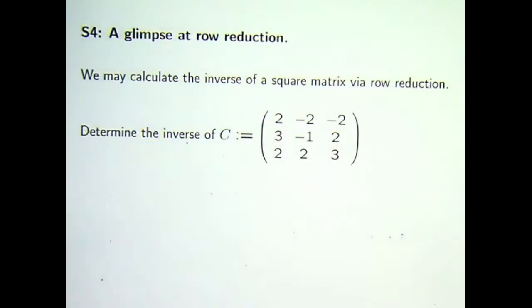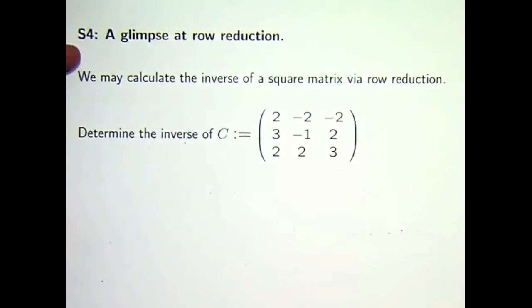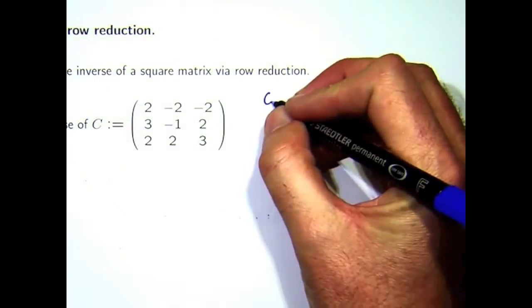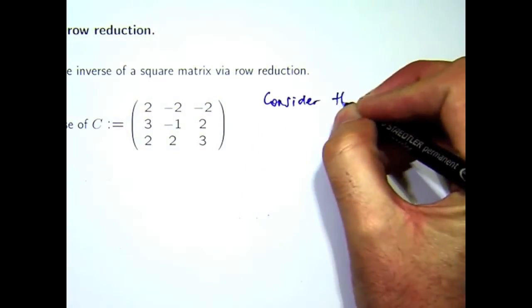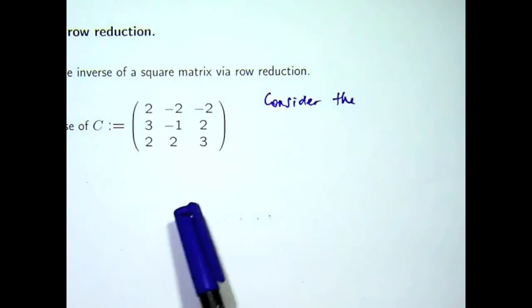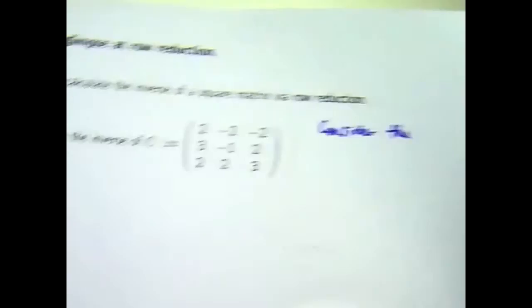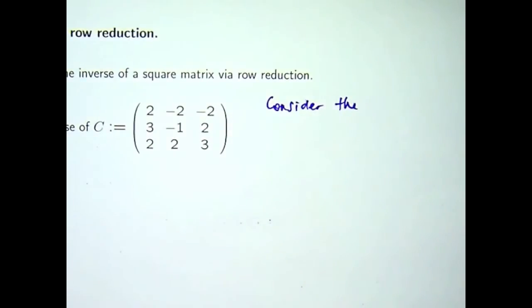One way of calculating the inverse of a given square matrix, 3 by 3, that's as complicated as we'll get, is to use operations called row reduction. Essentially you augment this matrix C with the identity matrix, and then you perform operations called row reduction.